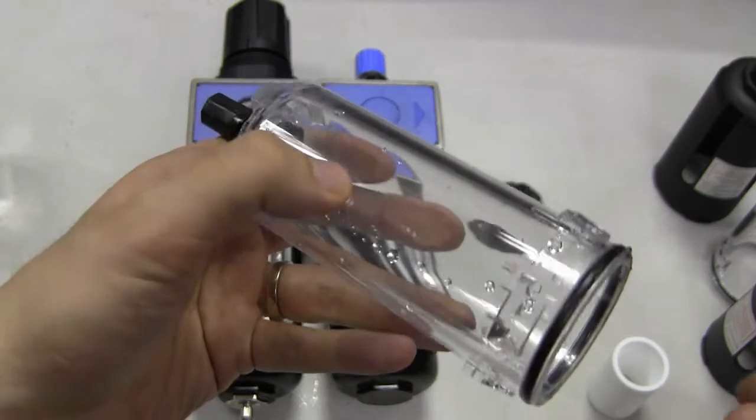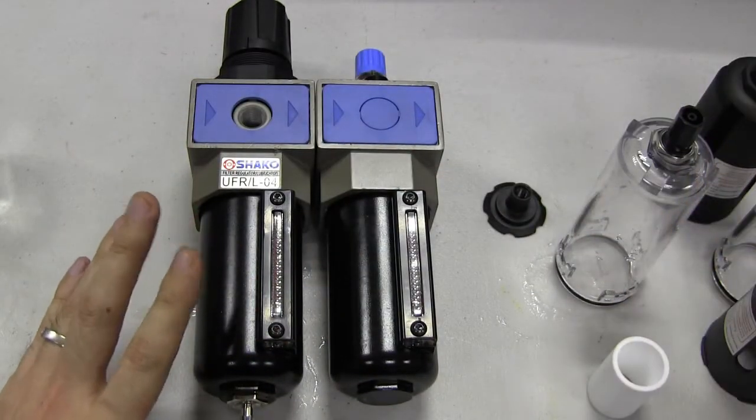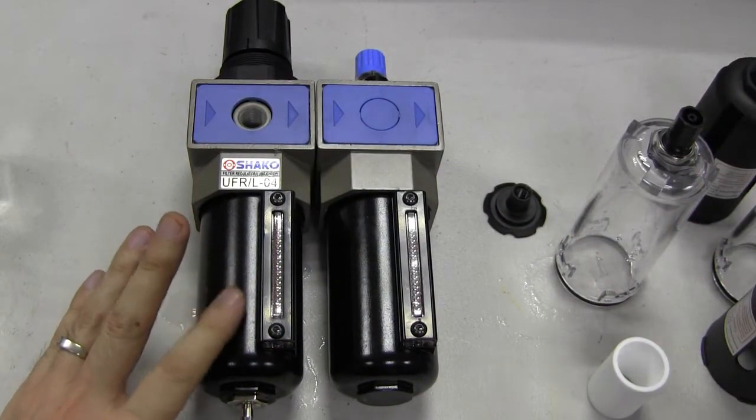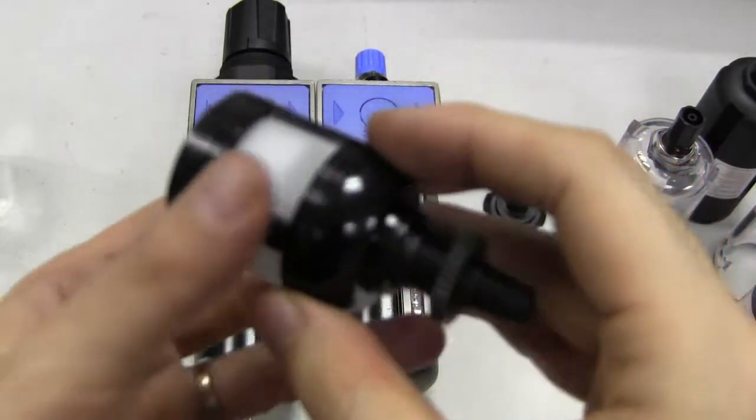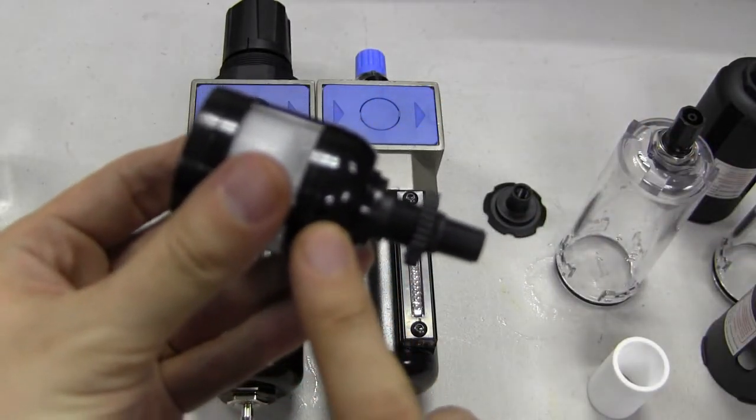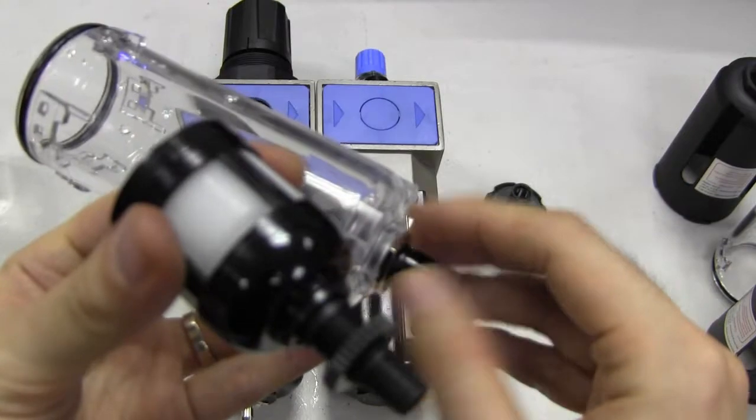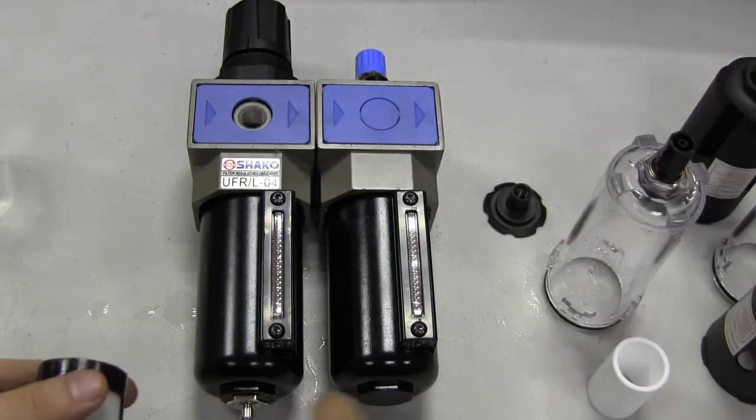If somebody hits the plastic bowl, there's a big probability that it will crack, so you'll need a heavy-duty aluminum bowl for that. Also, they have an auto drain - you can just change it out here or change it out here. And this is another version of their semi-auto drain.